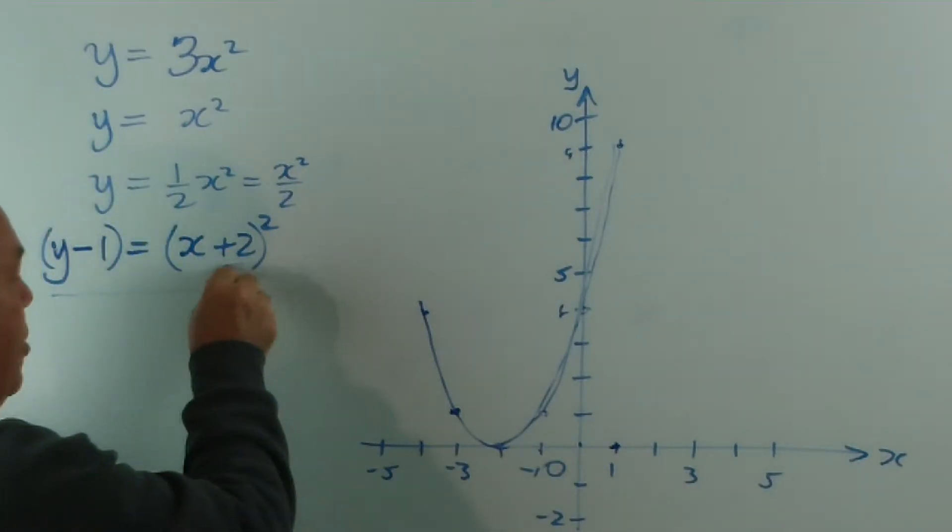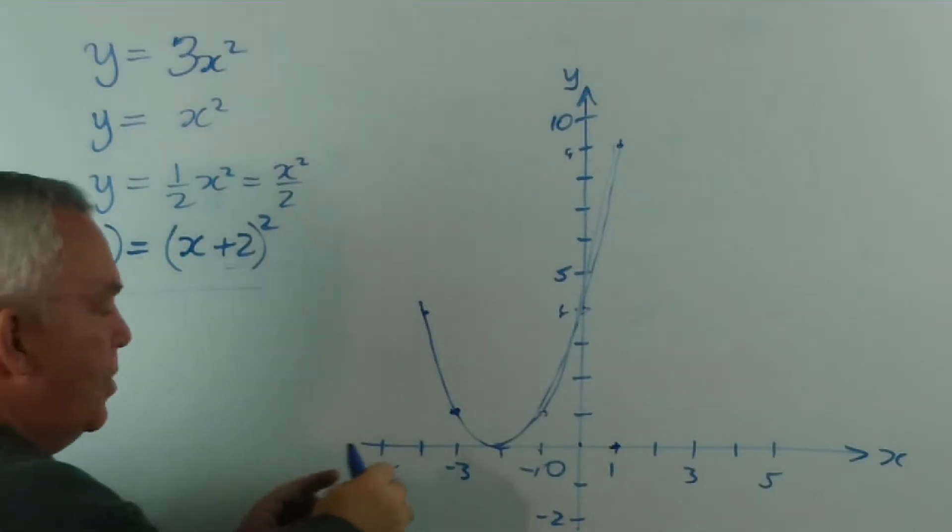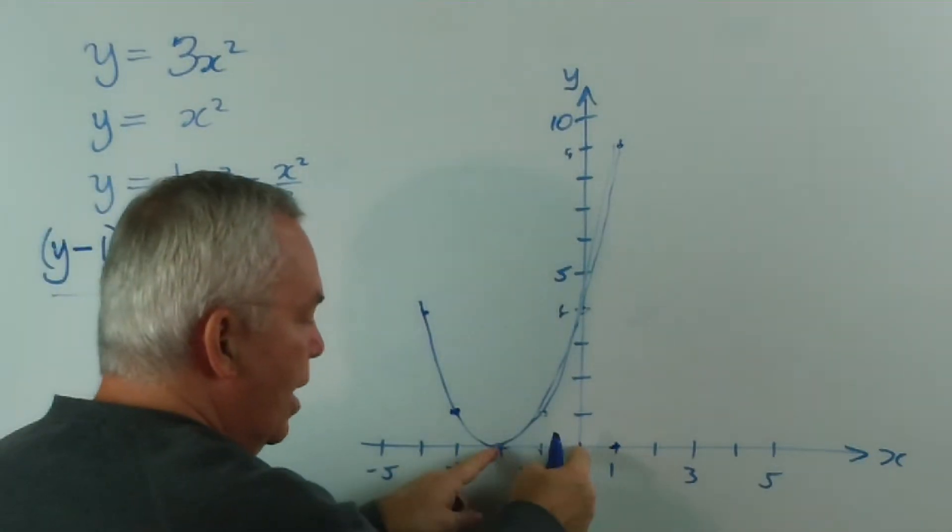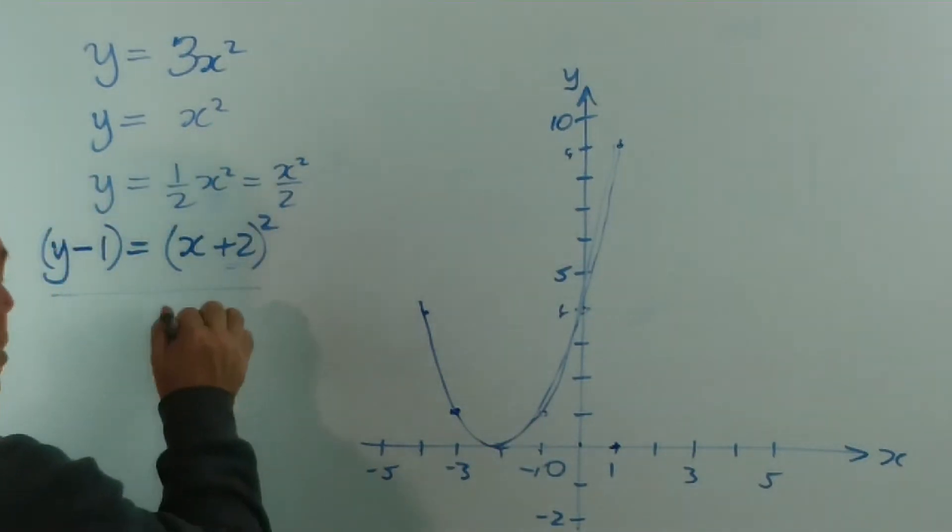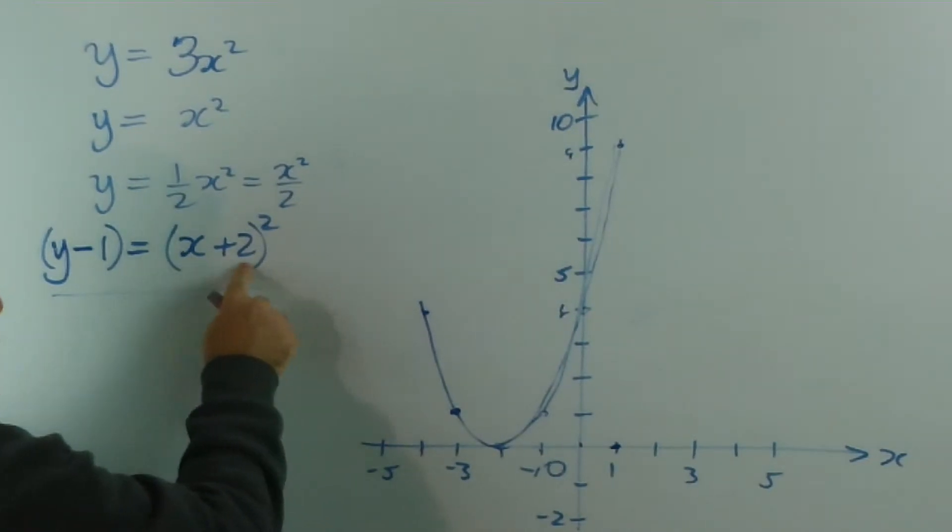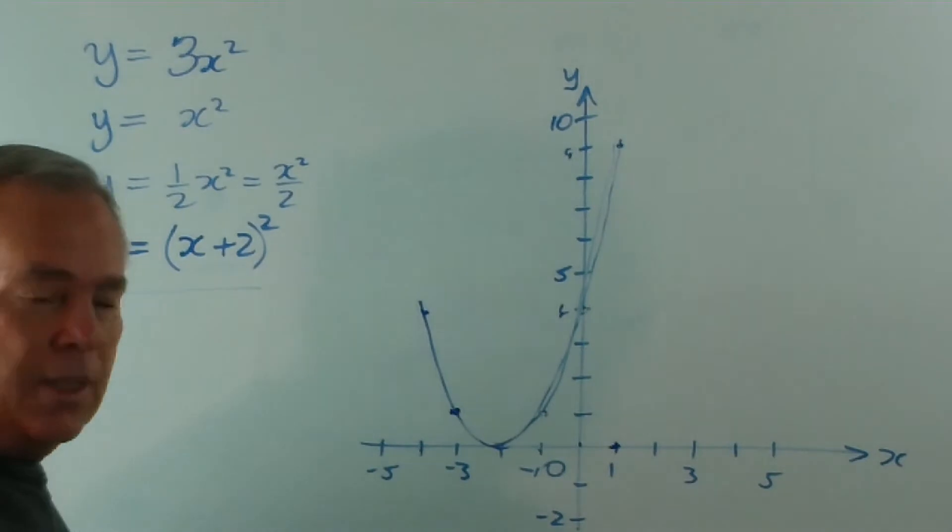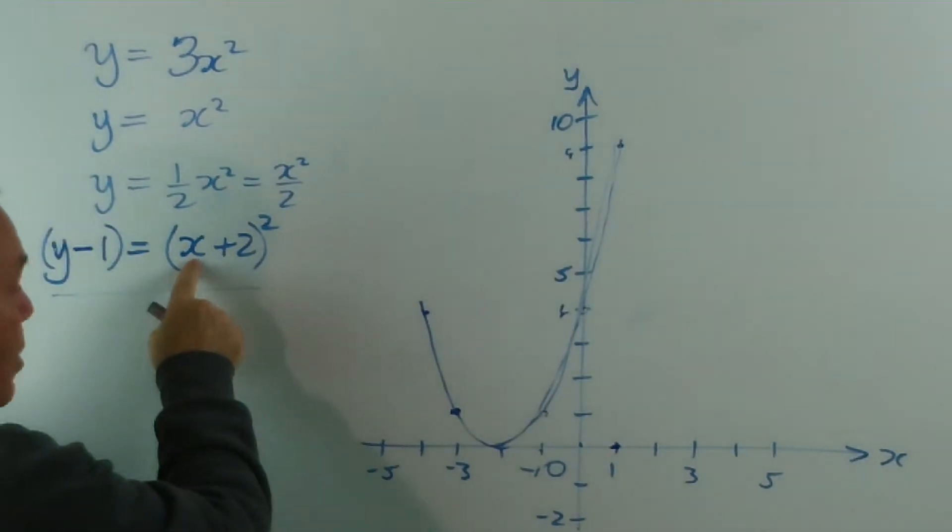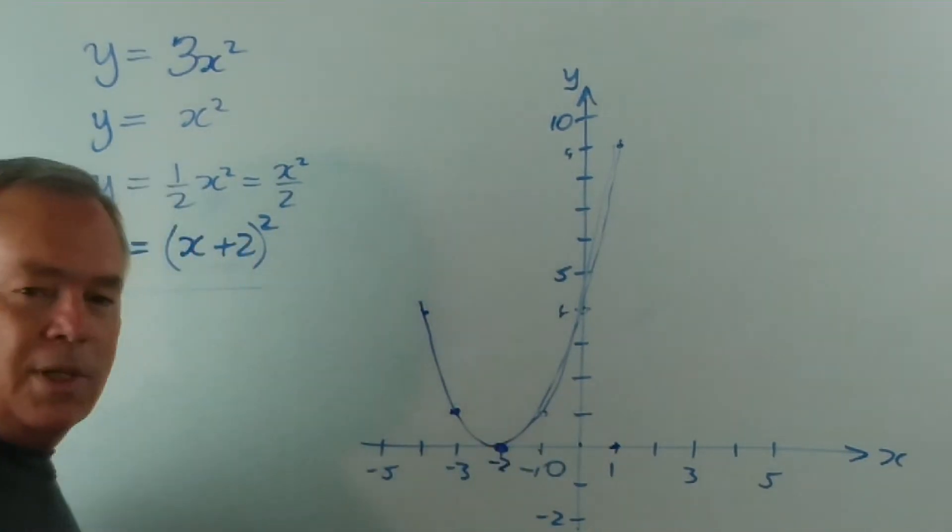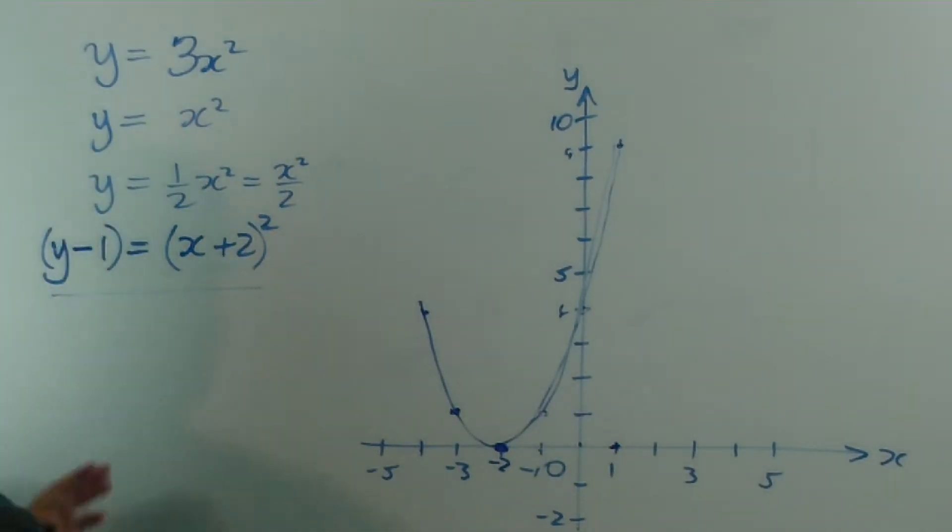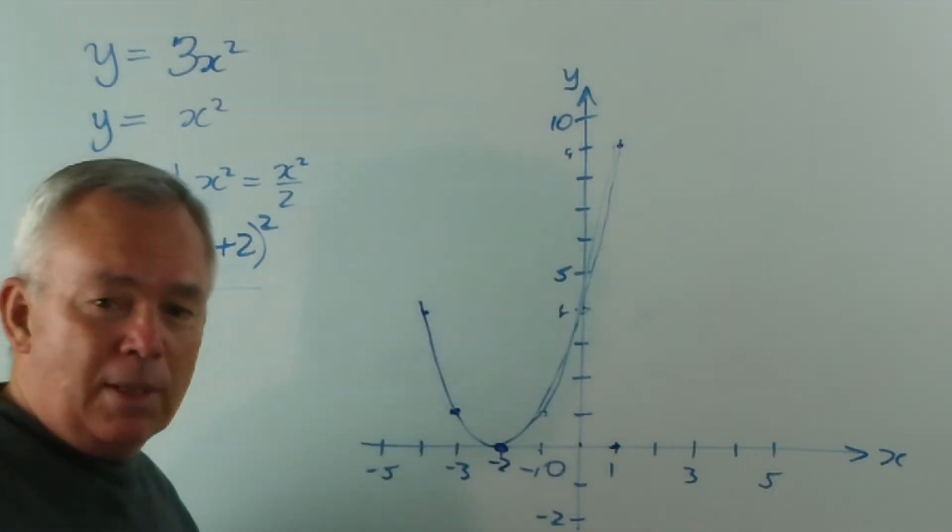That's what this does. When we add 2 to the x value, it behaves, this point behaves as though it's there. Another way to think of it is to say, what value of x would make this think it was zero and think it was at the vertex of the parabola? Well, if x was worth minus 2, minus 2 plus 2 would make this zero. So at x equals minus 2, it thinks it's at the vertex of the parabola. Now, it has not changed the shape of the parabola one little bit.